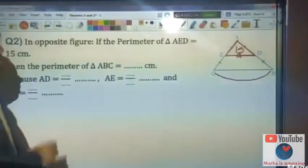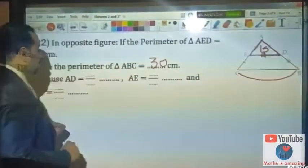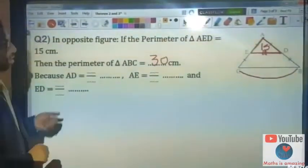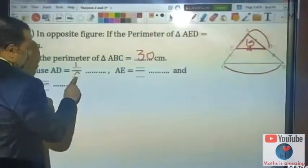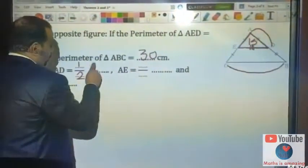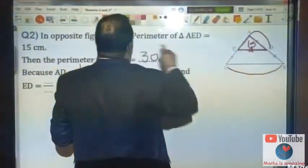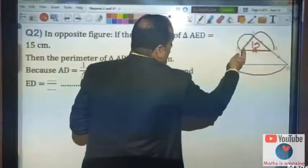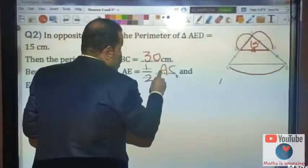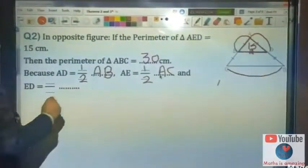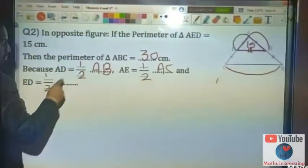The perimeter will be 13 because AD is half of AB, AE is half of AC, and ED is half of BC.